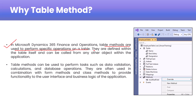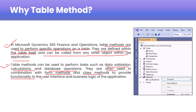Table methods are defined within the table itself and can be called from any other object within the application. They can be used to perform specific tasks like data validation, calculations, and database operations. They are often used in combination with form methods and class methods to provide functionality to the user interface and business logic of the application.